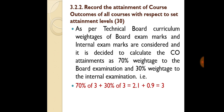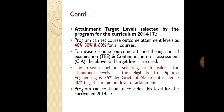To find the CO attainment, we have to give 70% weightage to the board examination and 30% weightage to the internal examination. The attainment target level was selected by the program for the curriculum 2014–2017 — the program can set course outcome attainment levels such as 40%, 50%, and 60% for all courses. To measure course outcome attainment through board examination, theory examination, and continuous internal assessment (CIA), the above set target levels are used.